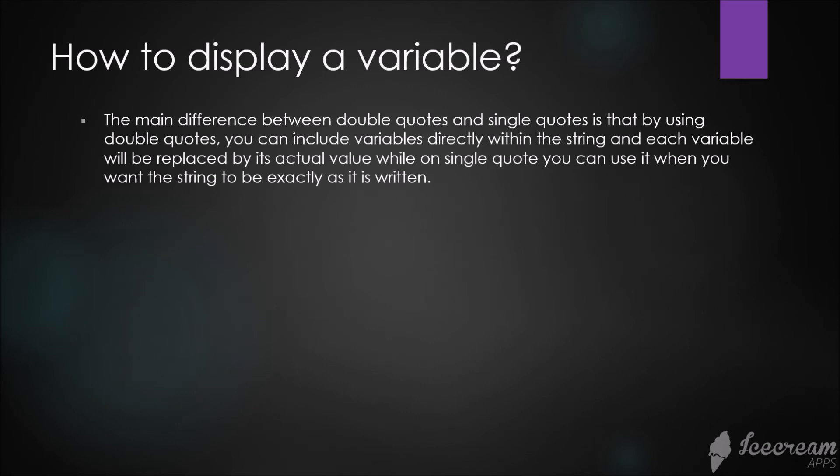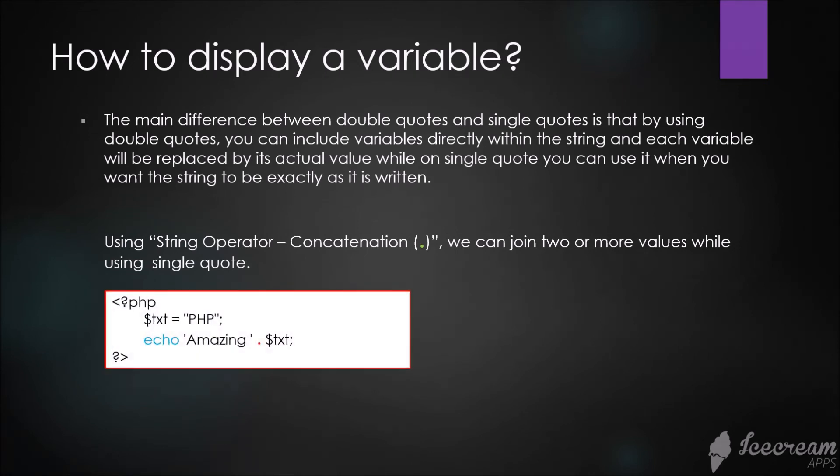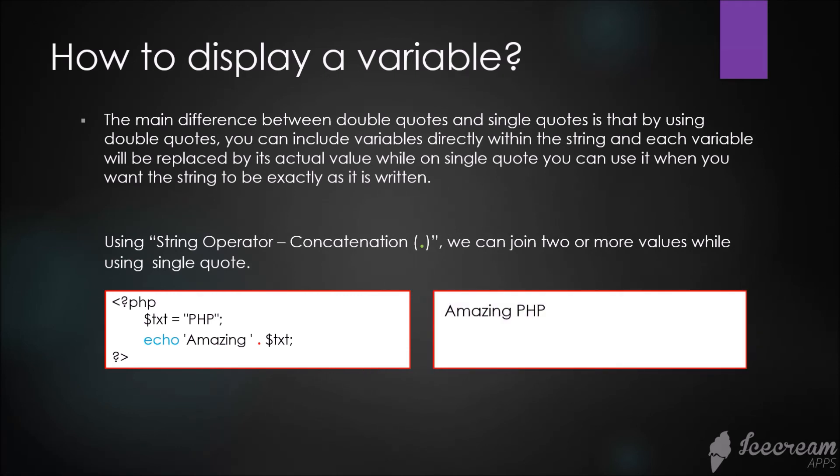What if we still want to use single quotes but have the variable replaced by its actual value? The solution is using string operators, the concatenation operator. We can join two or more values while using single quotes. We declare the variable with a value of 'PHP', then in the string we use single quotes. We don't quote the variable; instead we use the concatenation operator. That's how we solve the problem if we want to parse the variable and still use single quotes.